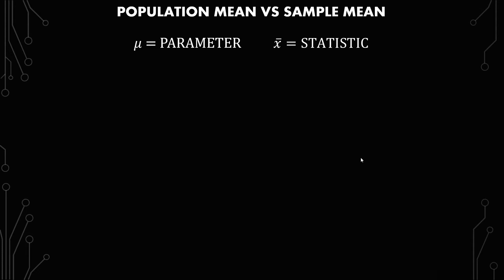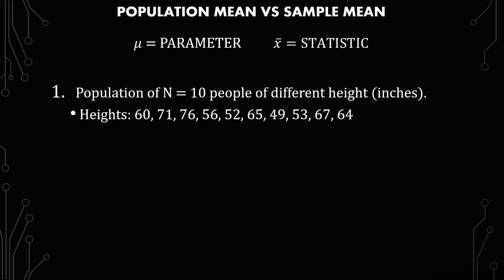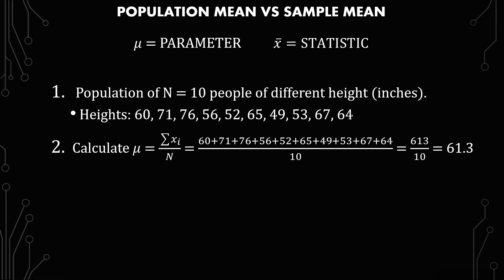For visualization, I'm going to be using a fairly simple population — only a population of 10 people of differing heights. Here are the numbers of the heights. The calculation for mu is the summation of each x divided by capital N, which is 10. So: 60 + 71 + 76 + 56 + 52 + 65 + 49 + 53 + 67 + 64 = 613, divided by 10, which equals 61.3. So the parameter mu is 61.3 inches.